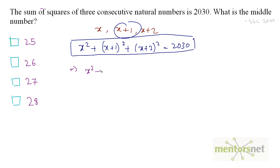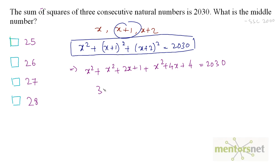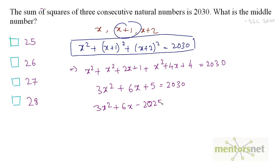Expanding: (x + 1)² = x² + 2x + 1, and (x + 2)² = x² + 4x + 4. Combining all three, we have 3x² + 6x + 5 = 2030. Moving 2030 to the left side: 3x² + 6x + 5 − 2030 = 0, which simplifies to 3x² + 6x − 2025 = 0.